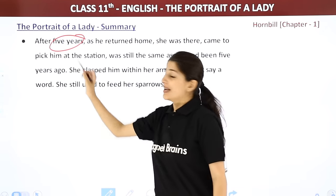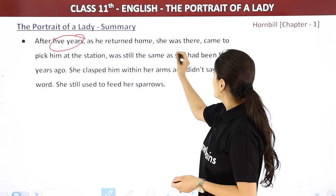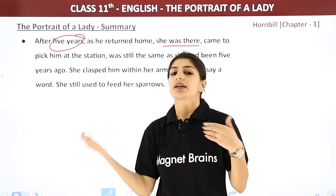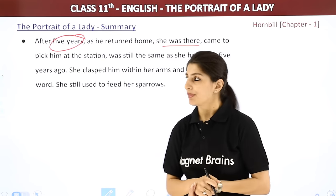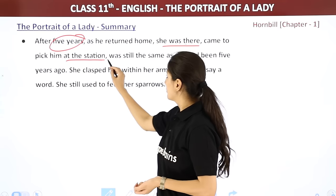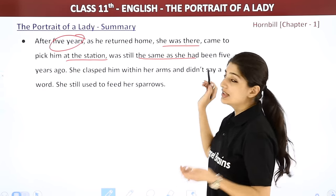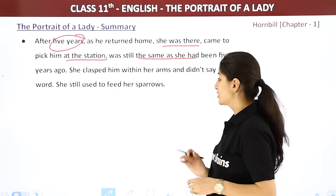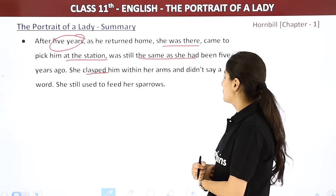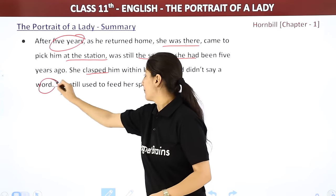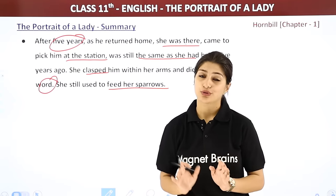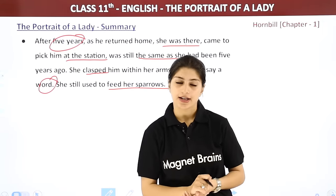After 5 years, when Khushwant returned, she was still there — grandmother had not died. She came to pick him up at the station, and she looked exactly the same as she had 5 years ago — not changed at all. She clasped him tightly in her arms and didn't say a word. When he returned home, he saw she was still feeding the sparrows, just as she had done 5 years before.